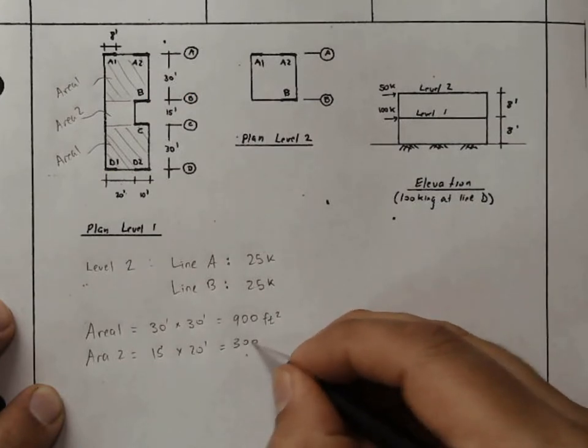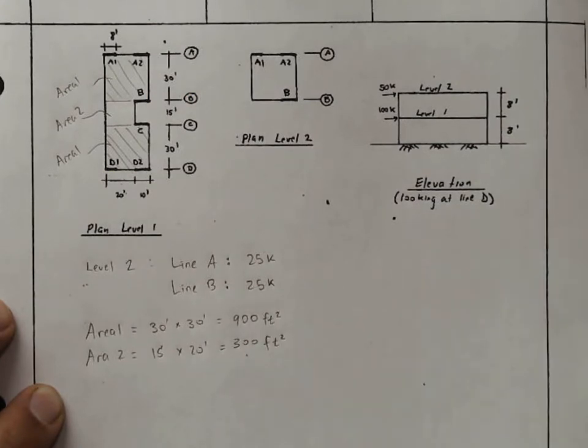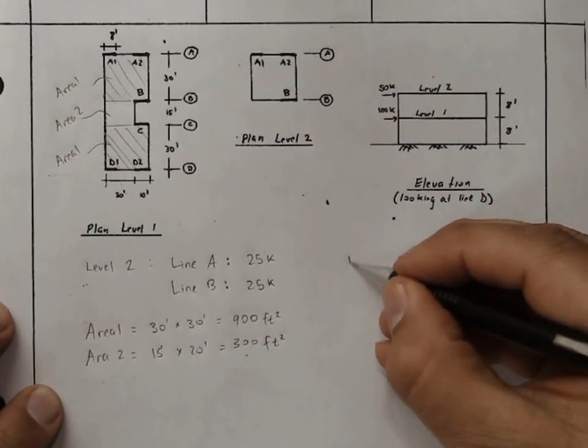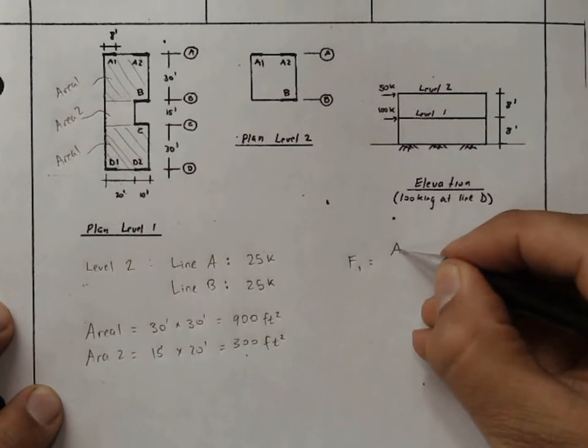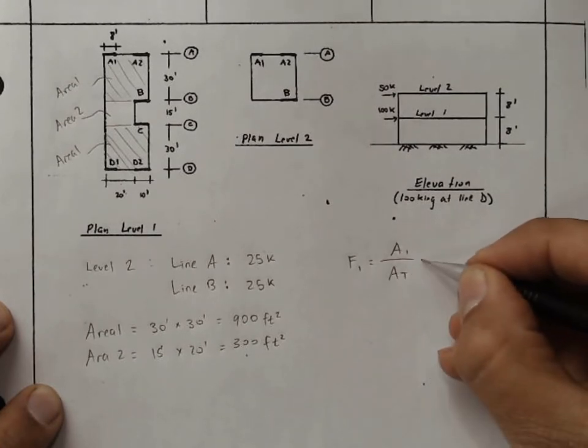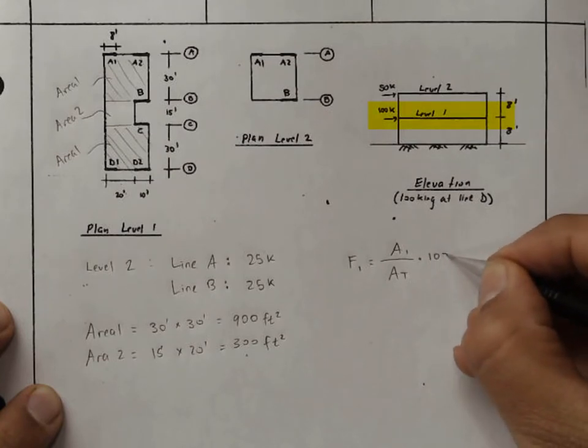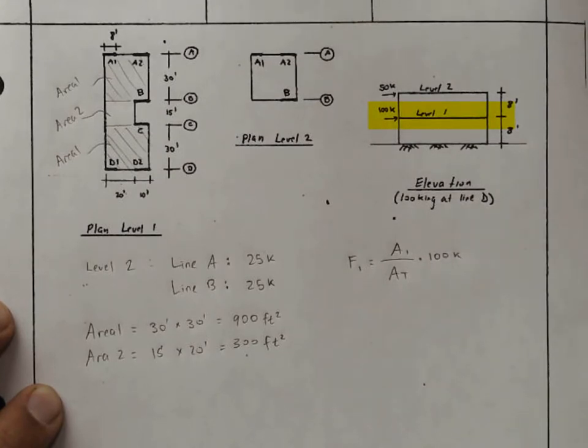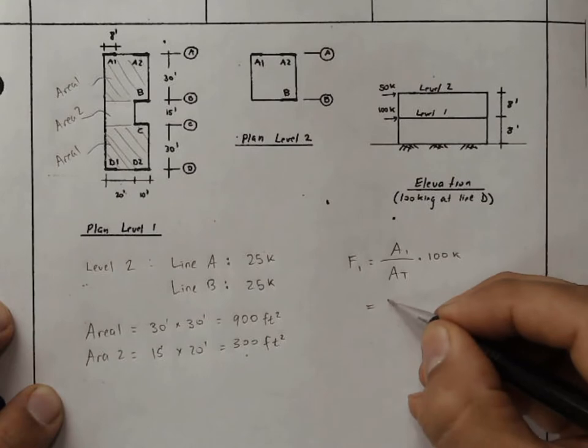And what we need to do now is allocate the force on each area proportional to that area. So the force on area 1 will be area 1 divided by the total area times the force of 100 kips. So this is equal to 900.